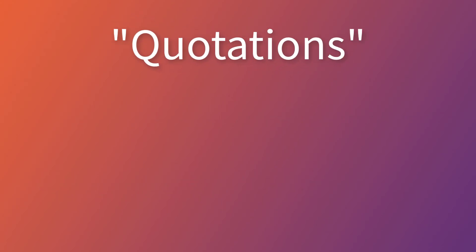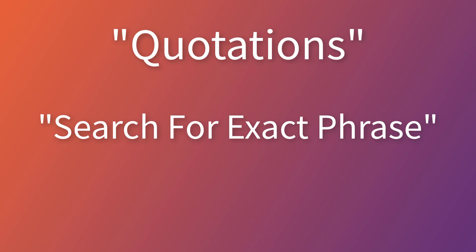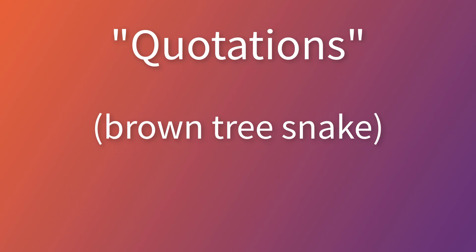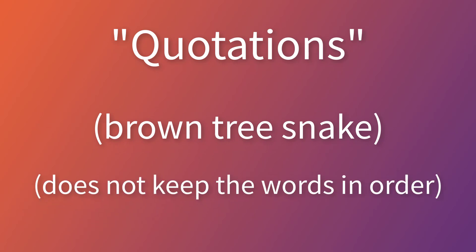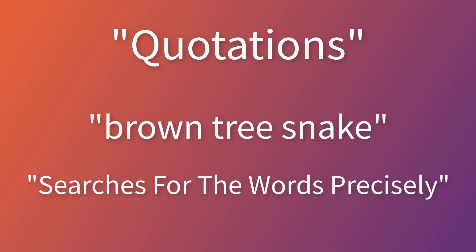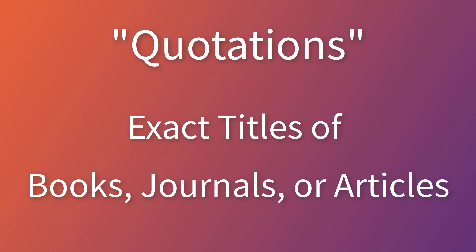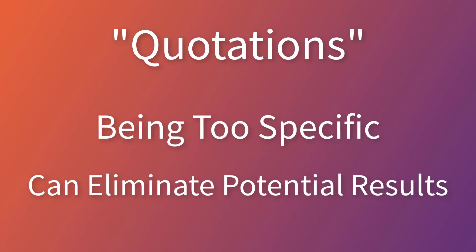Finally, let's talk about using quotations to search for exact phrases. While parentheses are useful to organize segments of a search query, they may not keep the terms in order. With brown tree snake, those three words just need to appear somewhere in the text, and some results may not be relevant. Placing quotations around a phrase like "brown tree snake" will search for that exact grouping of words for a more focused search. This is especially useful when searching for exact titles of publications. But be careful — phrases in quotations can be too specific and eliminate potential results. Balance your searches with and without quotations.